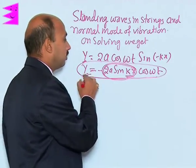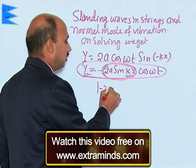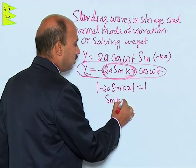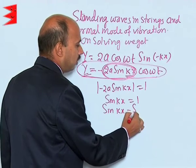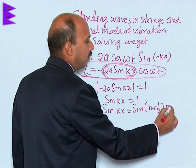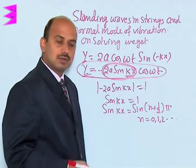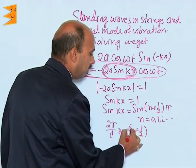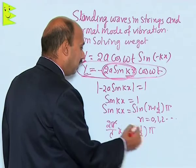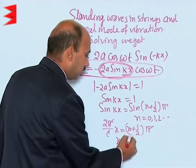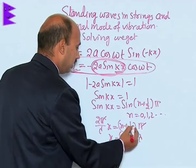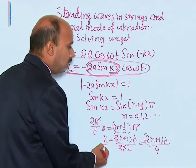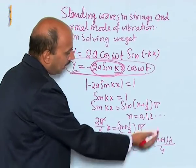An anti-node is where y is maximum, or the amplitude is maximum. This is possible if 2a sin(kx) is equal to 1, then the amplitude will be maximum. And sin(kx) equal to 1 means sin(kx) is equal to sin((n + 1/2)π), where n equals 0, 1, 2, 3 and so on. So we can write 2π upon lambda times x equals (n + 1/2)π. Cancelling π, x is equal to (2n+1)λ/4. For all these positions, the amplitude is maximum.